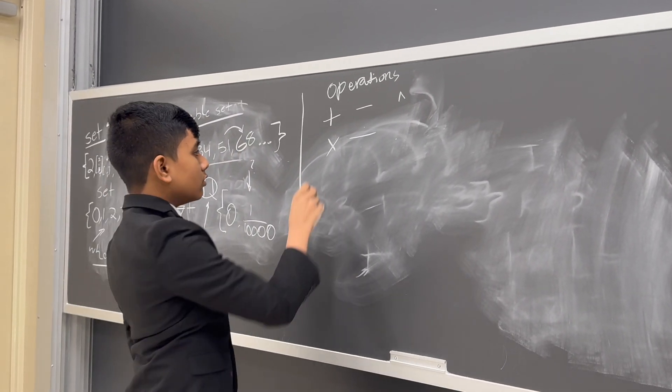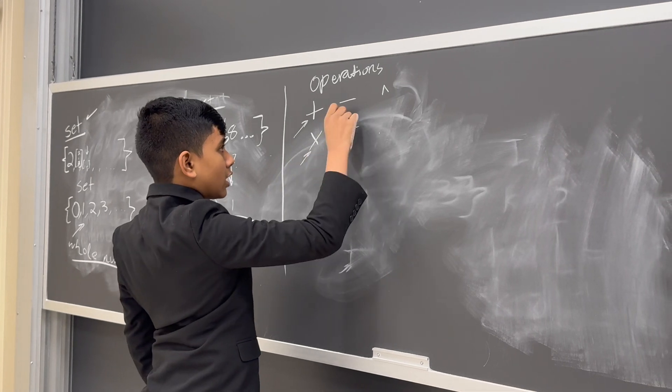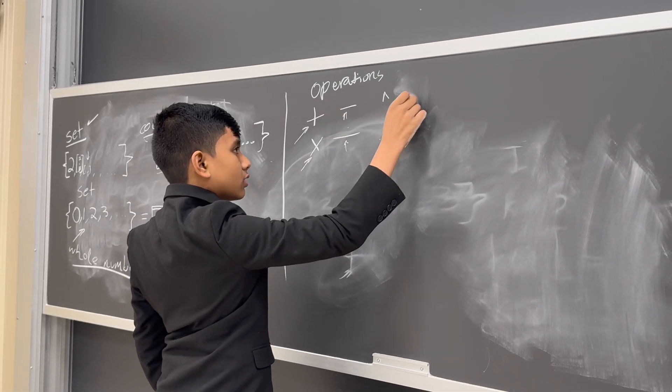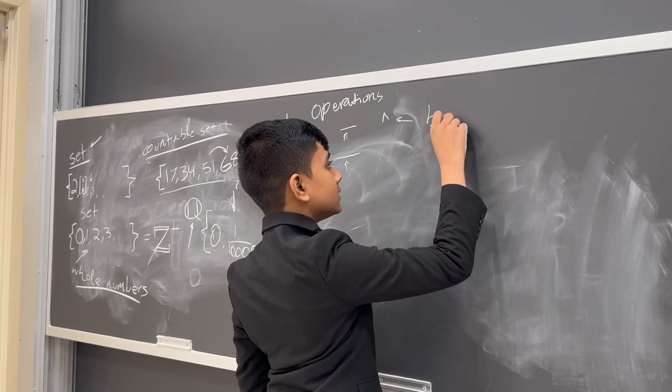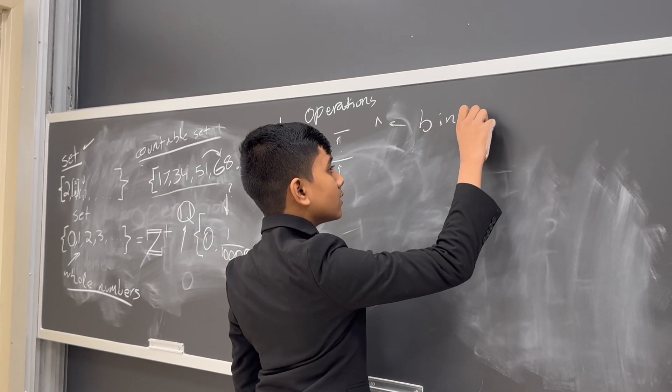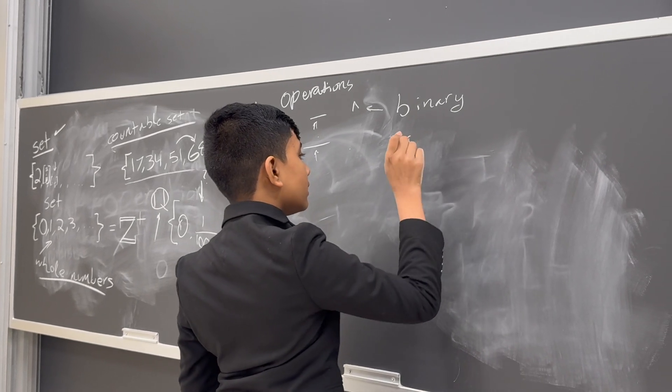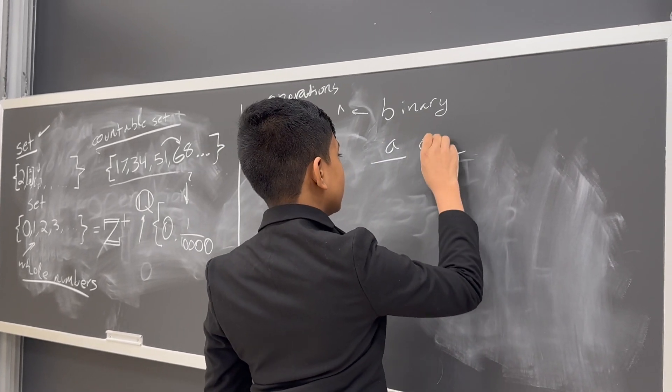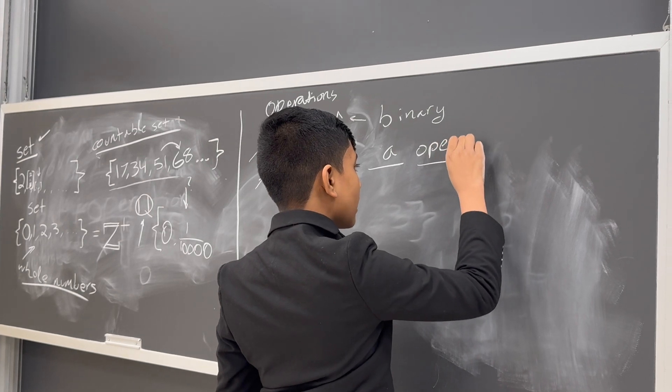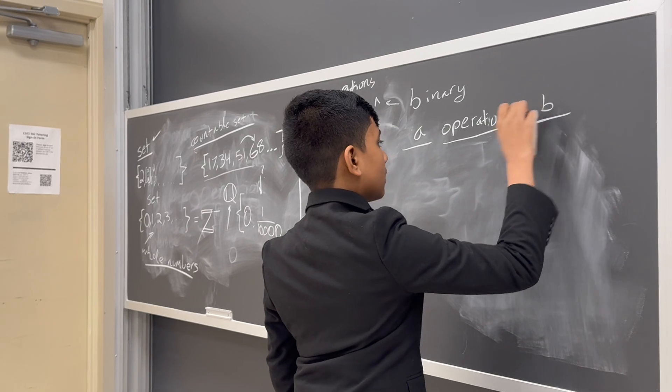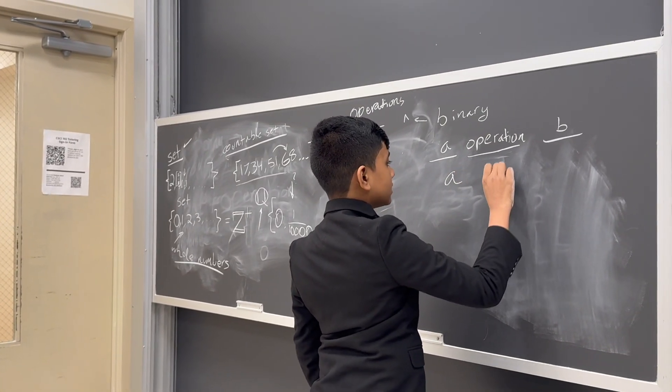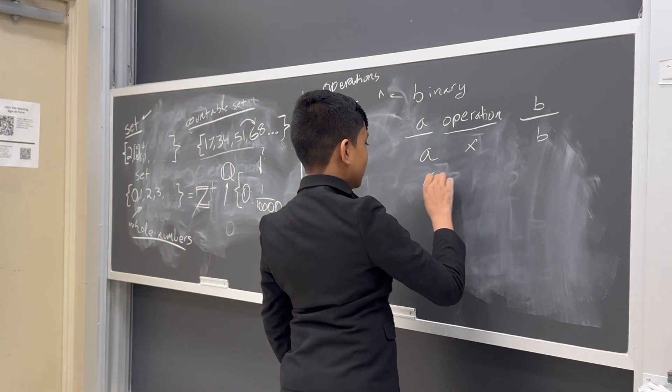It doesn't quite matter. So, these are binary operations, and they are what we'll mostly be using. Binary means that we put one number in, then the operation, and then the other number. So, for example, a times b, a plus b.